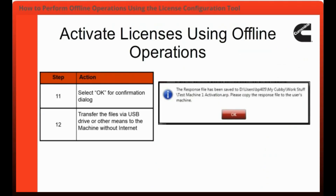You will now need to select OK in the confirmation pop-up window and then transfer the files via USB drive to the machine without internet connectivity. Remember to transfer all files created for each applicable license.